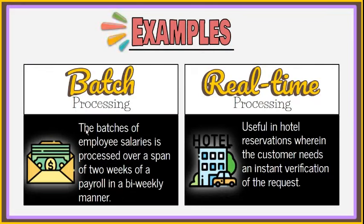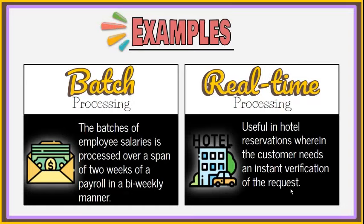An example of batch processing is when a company processes the payroll of its employees in a bi-weekly manner, processing batches of employees' salaries over a span of two weeks. In a hotel reservation system, it is extremely useful for customers to have instant verification of their request — therefore, this is an example of real-time processing.